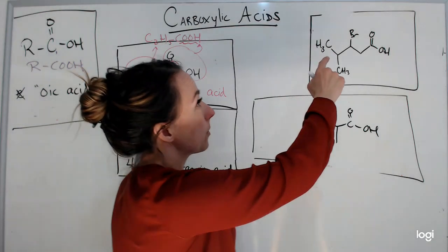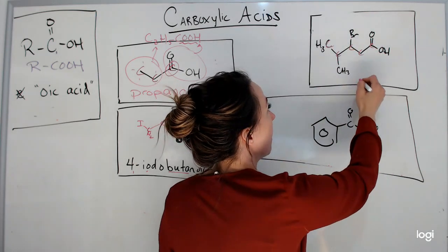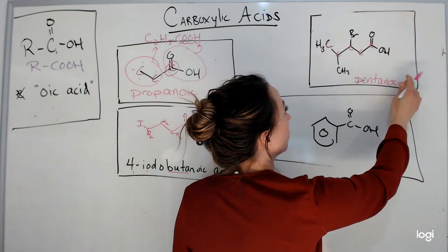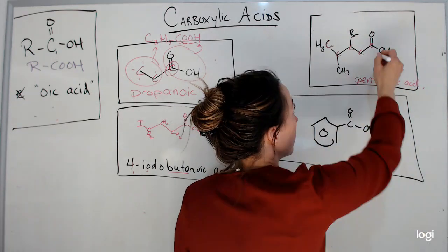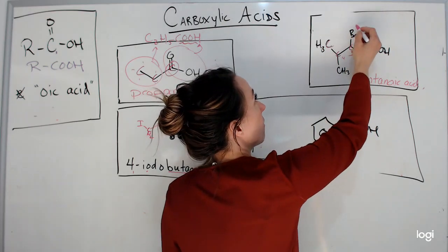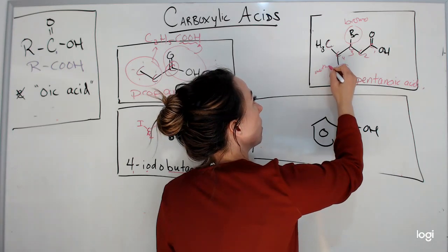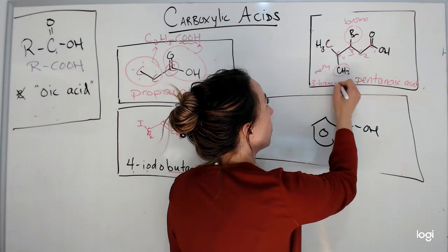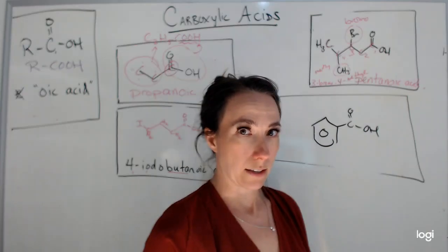This next one has one, two, three, four, five carbons in the longest chain, making this 'pentanoic acid.' This has to be carbon one, so counting one, two, three, four — off of carbon three I have a bromo, and off of carbon four I have a methyl. Bromo comes first alphabetically, so the name is 3-bromo-4-methylpentanoic acid.